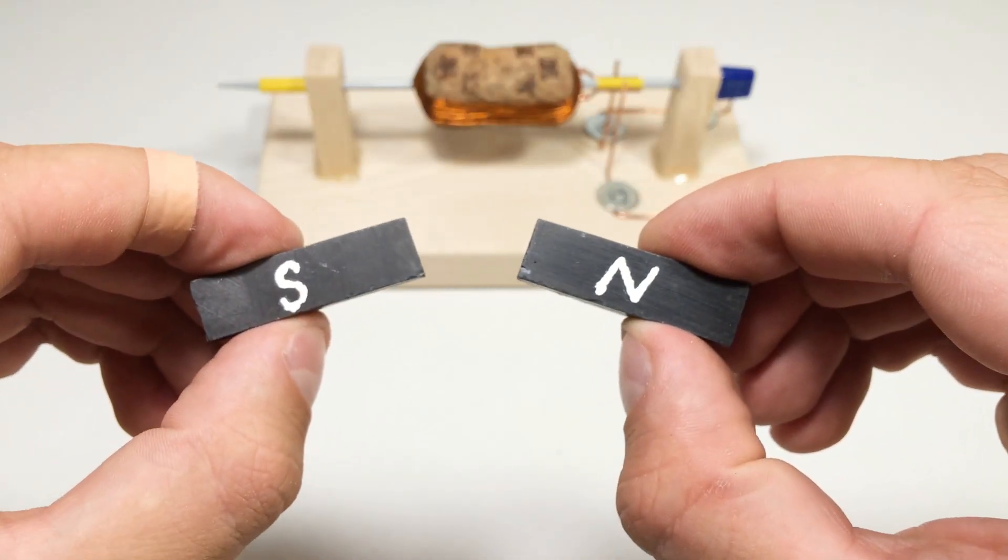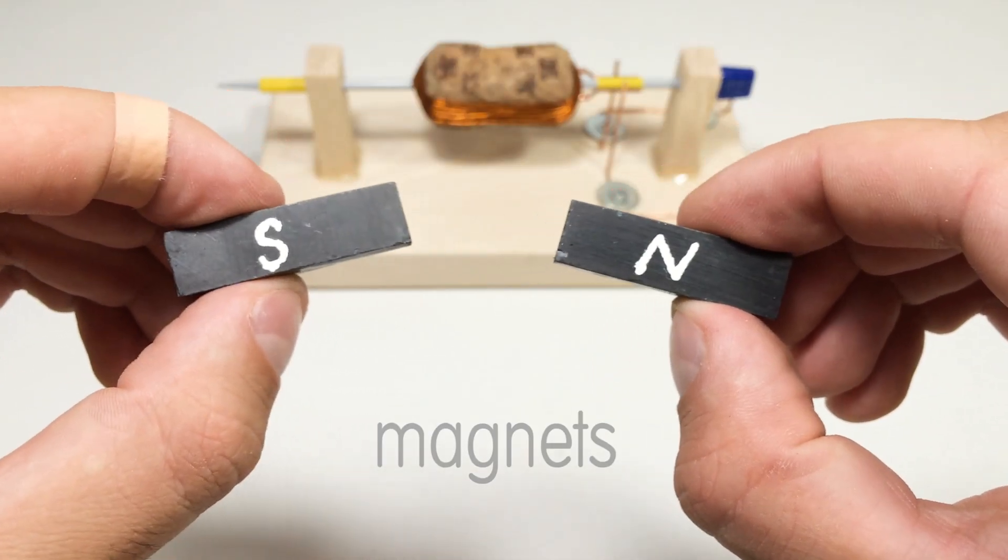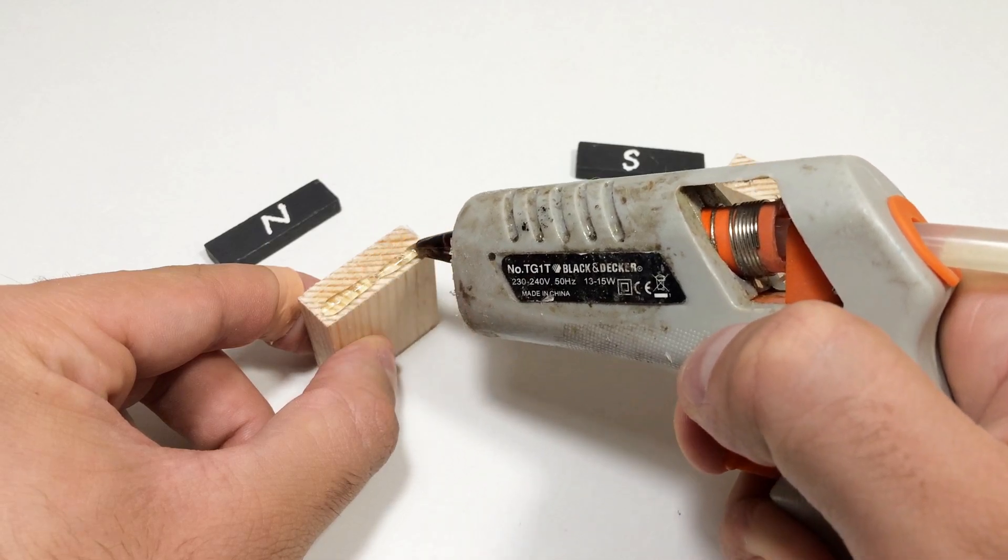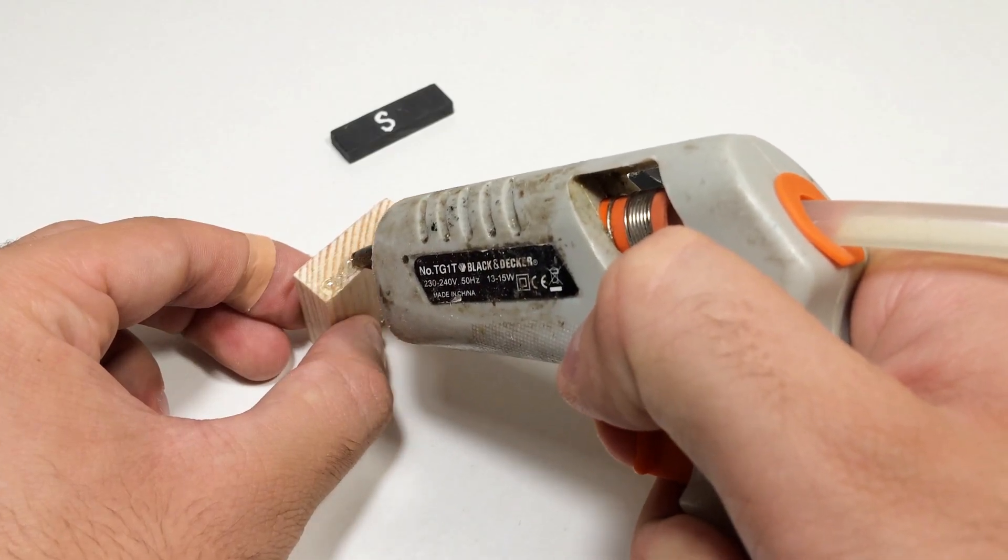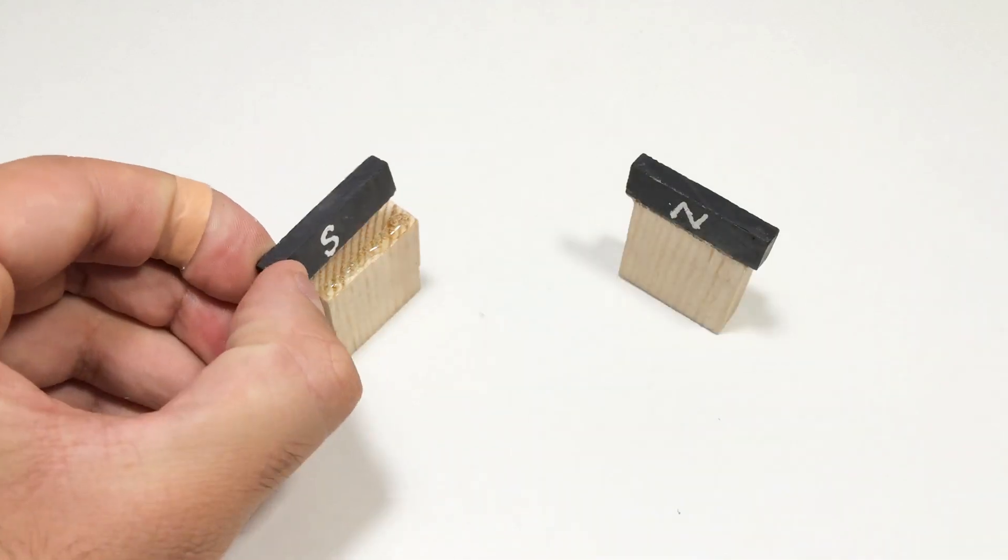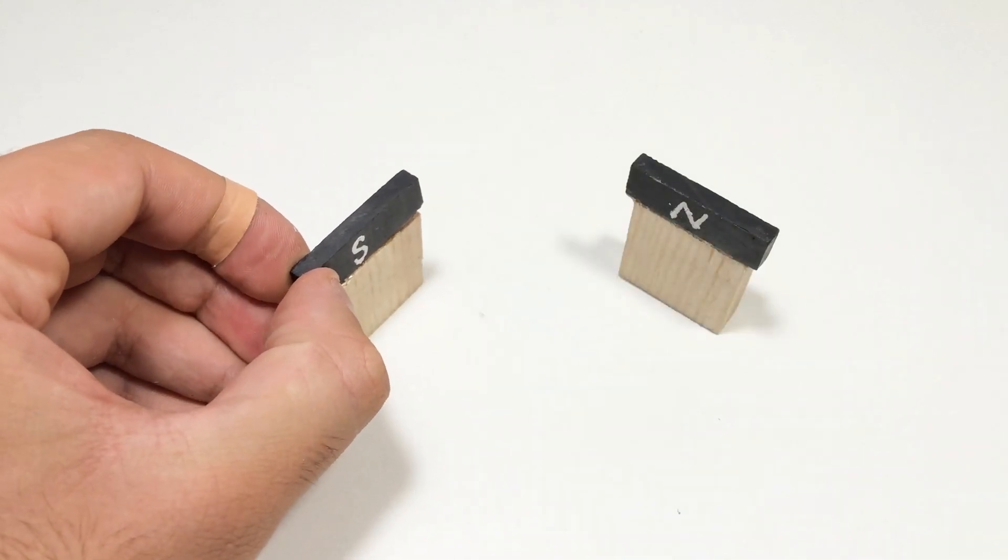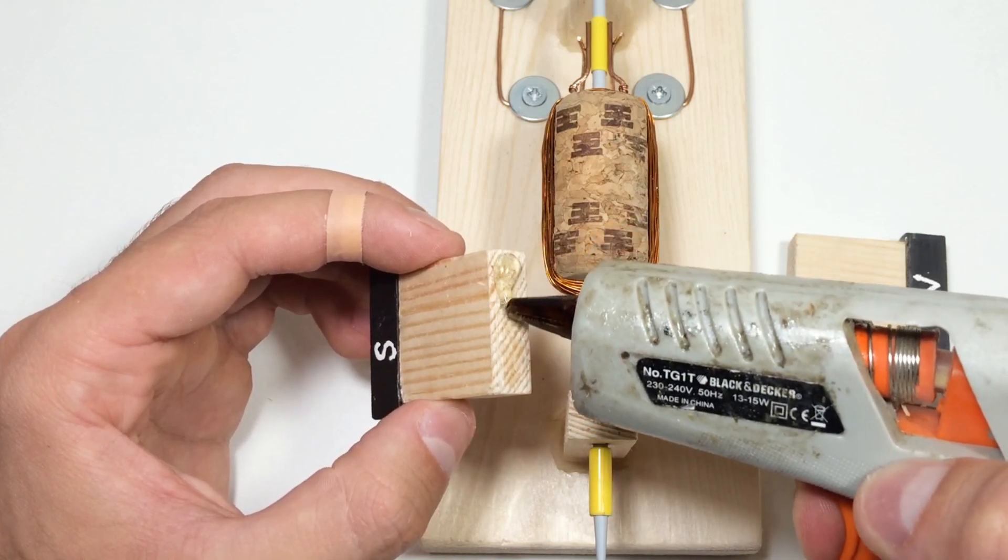Then we need two magnets, which we glue on small wooden blocks. Then we glue the resulting blanks on the base.